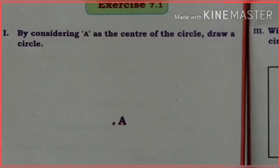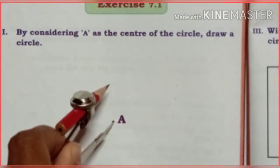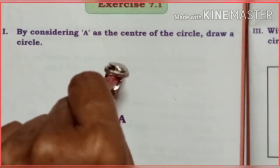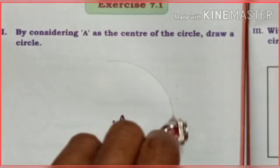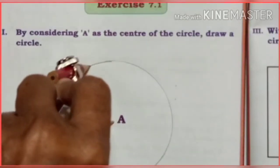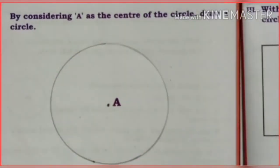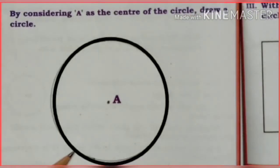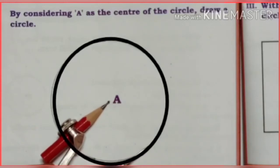Let's draw a circle now. Take a compass, touch the needle to a point, and draw the circle. We get a circle, and this is the center point of the circle, A.